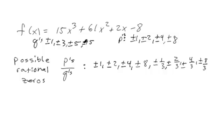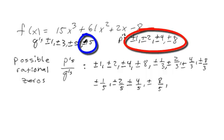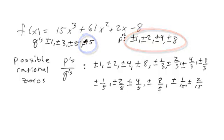Okay. Anyway, dividing all the P's by the plus or minus 5, so that if we do that, we get plus or minus 1 fifth, plus or minus 2 fifths, plus or minus 4 fifths, plus or minus 8 fifths. And then dividing everything by 15 now, we get plus or minus 1 over 15, plus or minus 2 over 15, plus or minus 4 over 15.